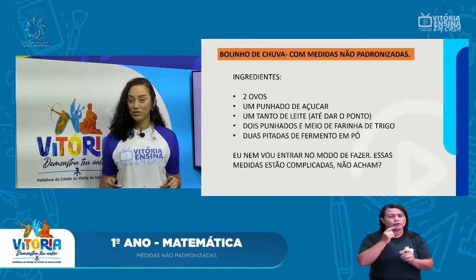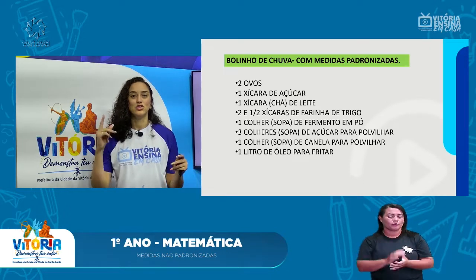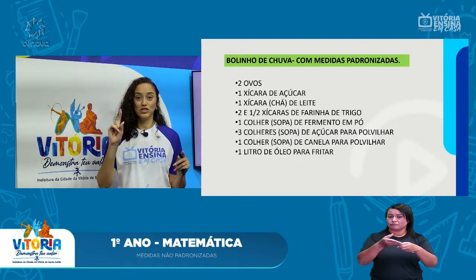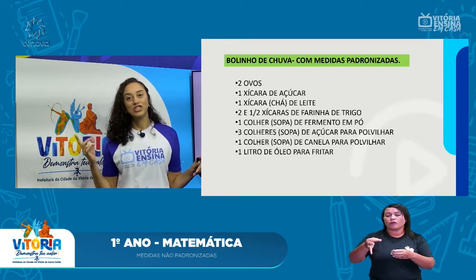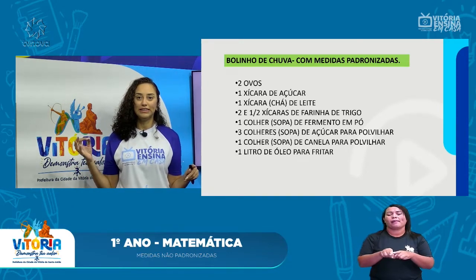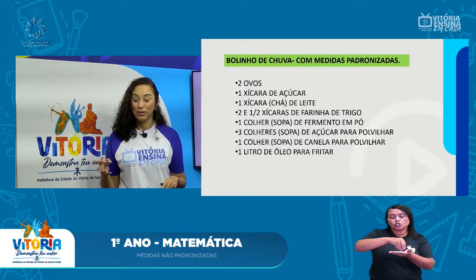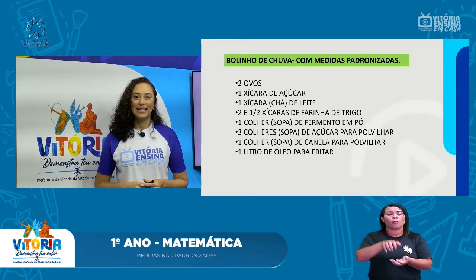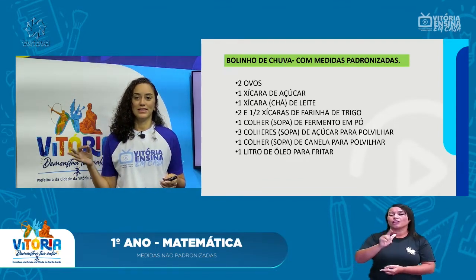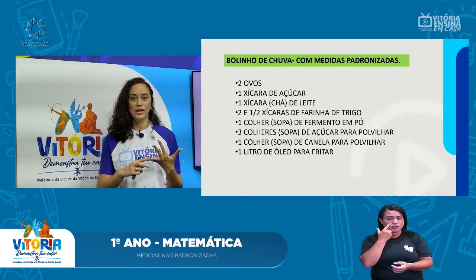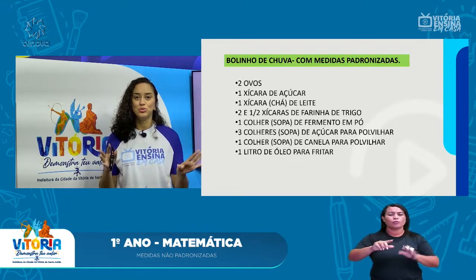Agora, quando a gente padroniza, a partir do momento que deixa tudo igualzinho, fica tudo no padrão. A mesma receita de bolinho de chuva fica: 2 ovos, 1 xícara de açúcar, 1 xícara de chá de leite, 2,5 xícaras de farinha de trigo, 1 colher de sopa de fermento, 3 colheres de sopa de açúcar para polvilhar, 1 colher de sopa de canela para polvilhar e 1 litro de óleo. As medidas padronizadas são xícara, colher e litro. Quando a gente padroniza, fica tudo mais fácil.